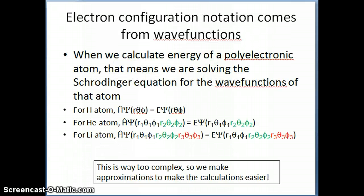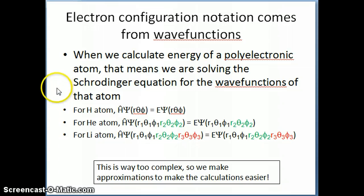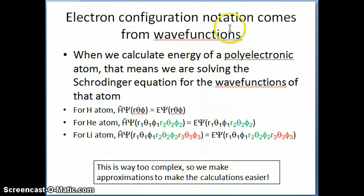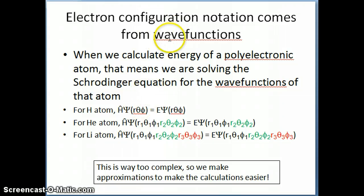Now let's talk about how we actually write electron configurations. You may be familiar with this from an intro course or high school — it's fairly simple to write — but you might not understand exactly why you write them this way. The notation for electron configuration really comes from the wave function itself.